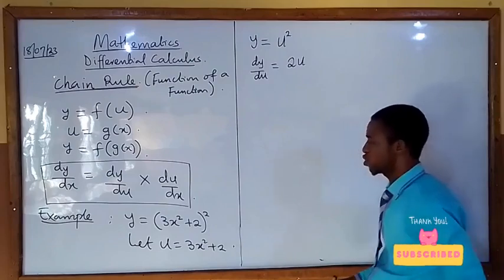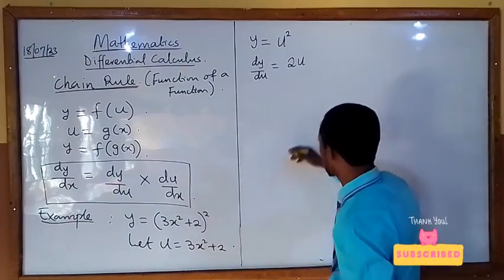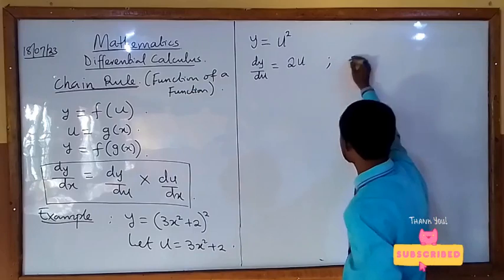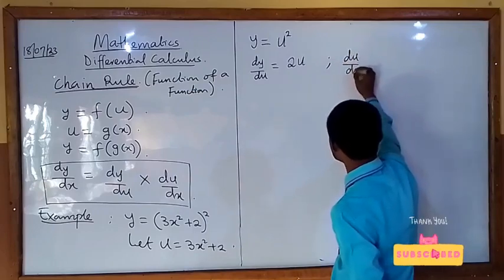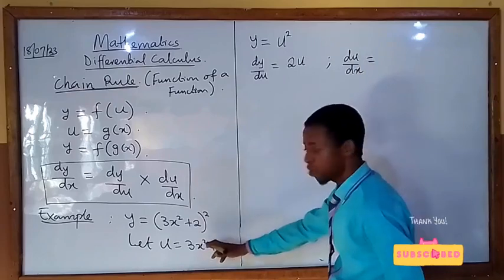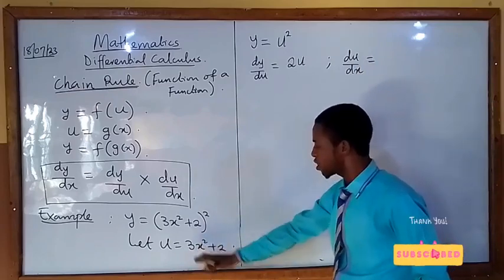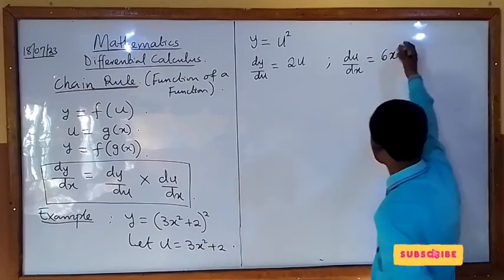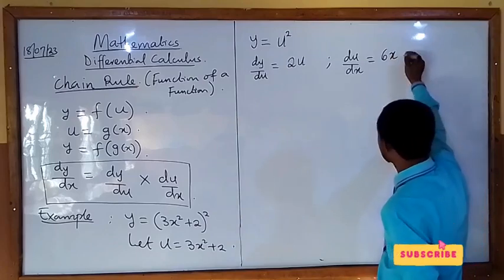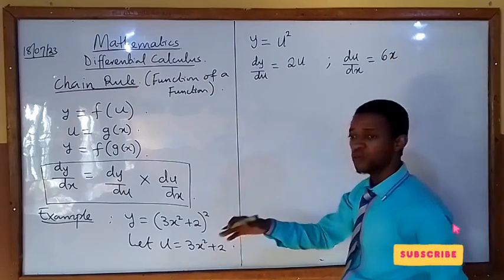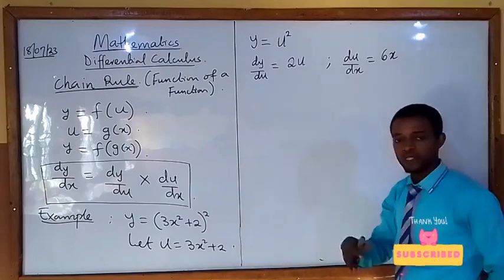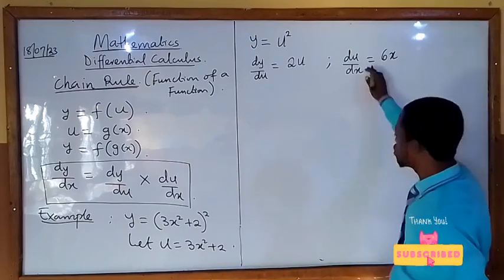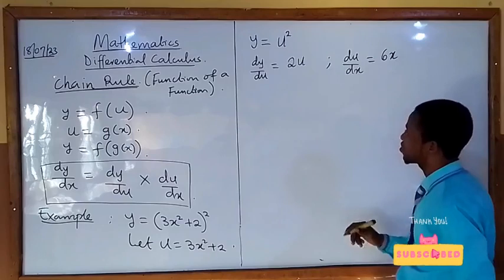Now to find du/dx, differentiate u with respect to x. du/dx becomes, using the method of differentiation, 2 will multiply 3 and that's 6x, subtract 1 from the power, so 6x plus 0. You can watch our previous video on derivatives to understand the method of differentiation very well. du/dx here is 6x.